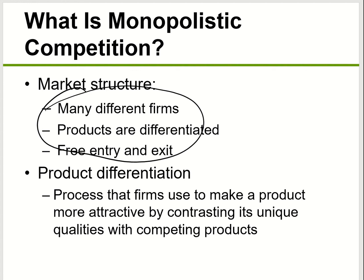Product differentiation means companies sell similar but somewhat different products. For example, think about a t-shirt. If you buy a t-shirt from different stores, they all serve the same purpose — two sleeves, a neck area — so they all look very similar, but with different design, different material, different color, and different prices. So consumers can distinguish between which one is which.